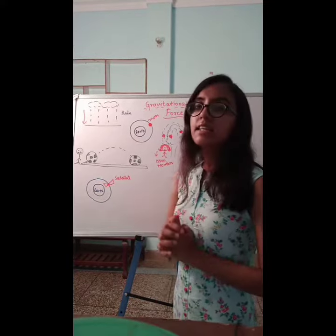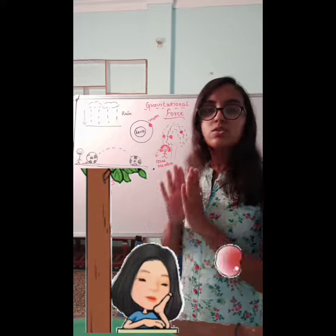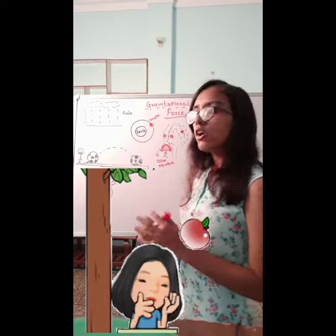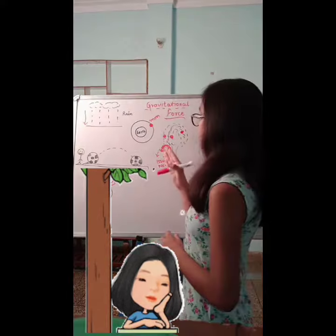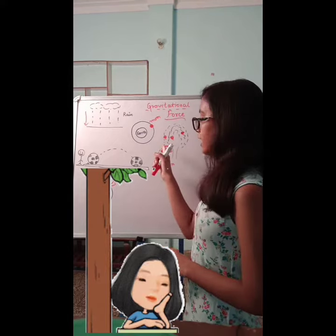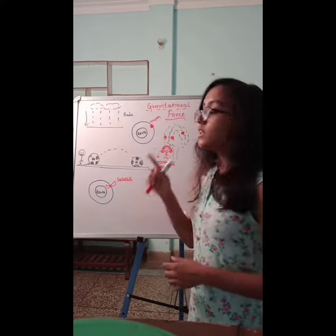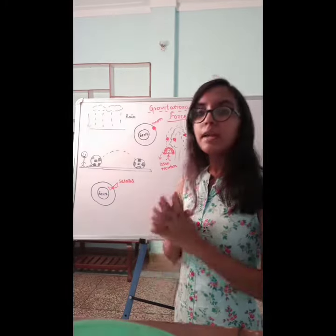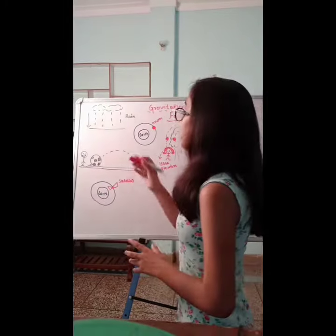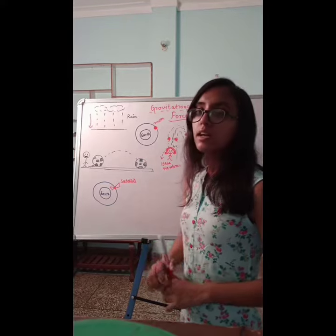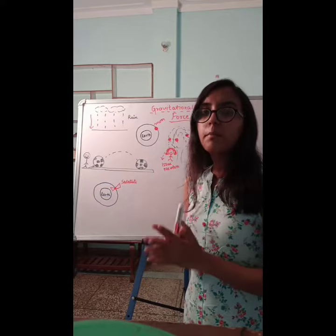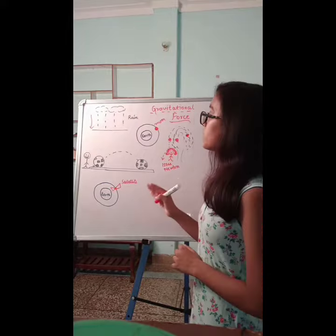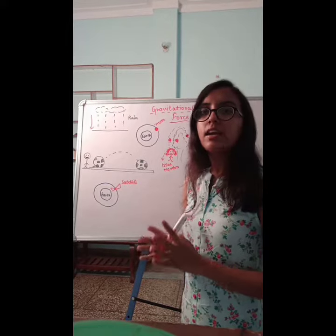The great scientist Sir Isaac Newton was once sitting under an apple tree and one apple fell on his head and eventually on the ground. The falling of the apple made him realize that in all these events there must be some common force of attraction acting between all these objects and the earth.